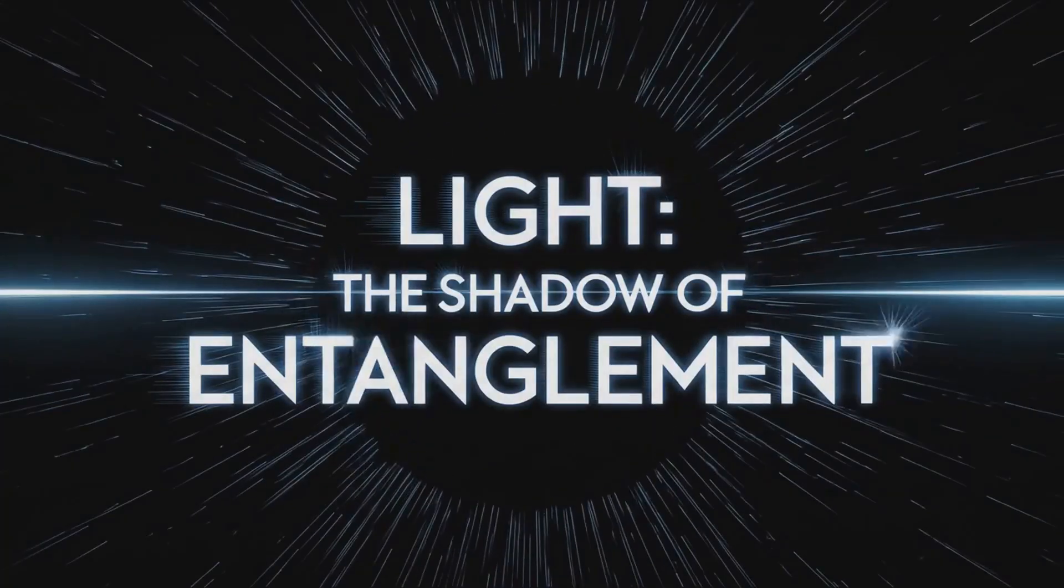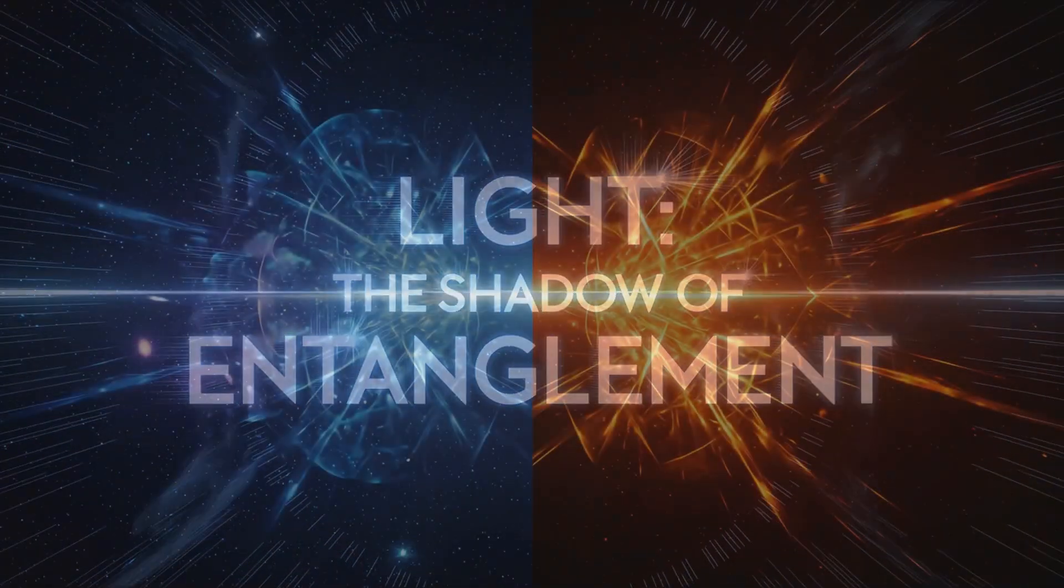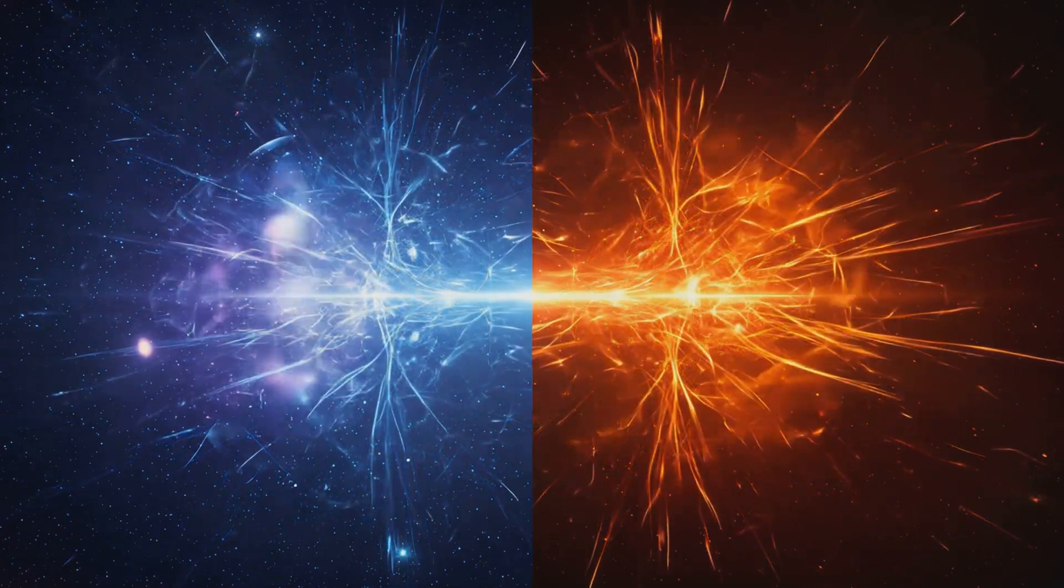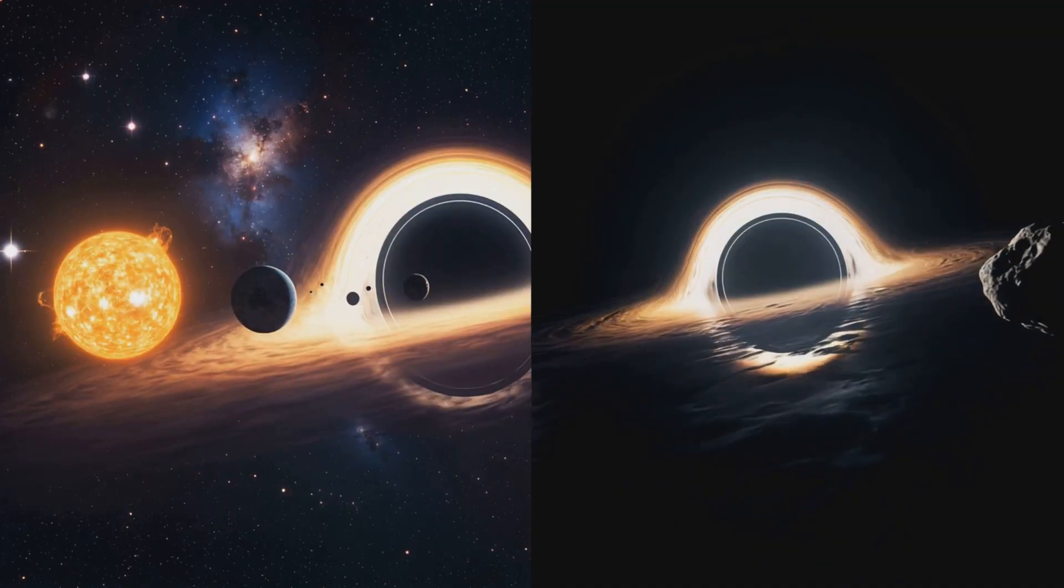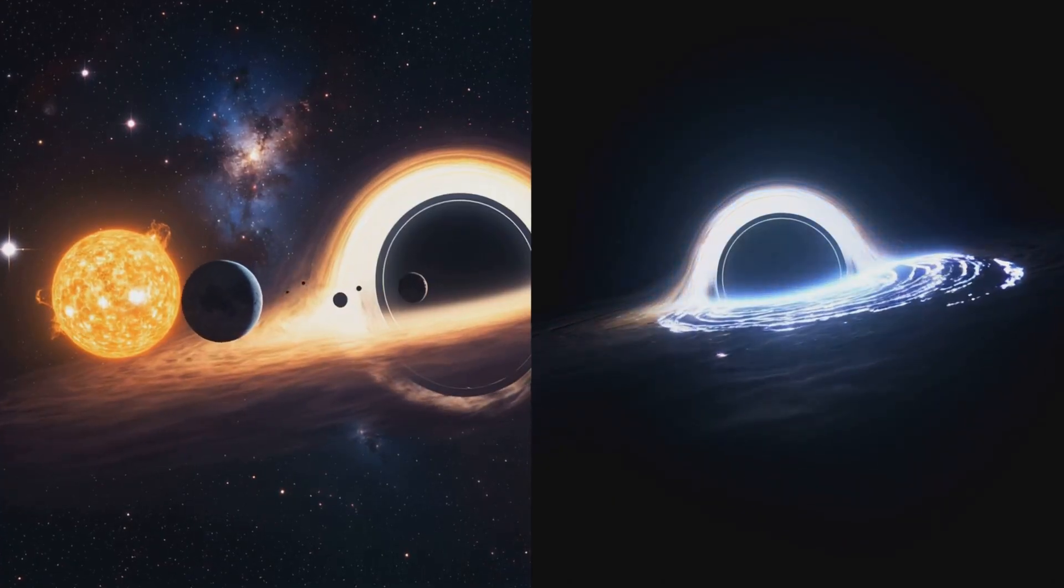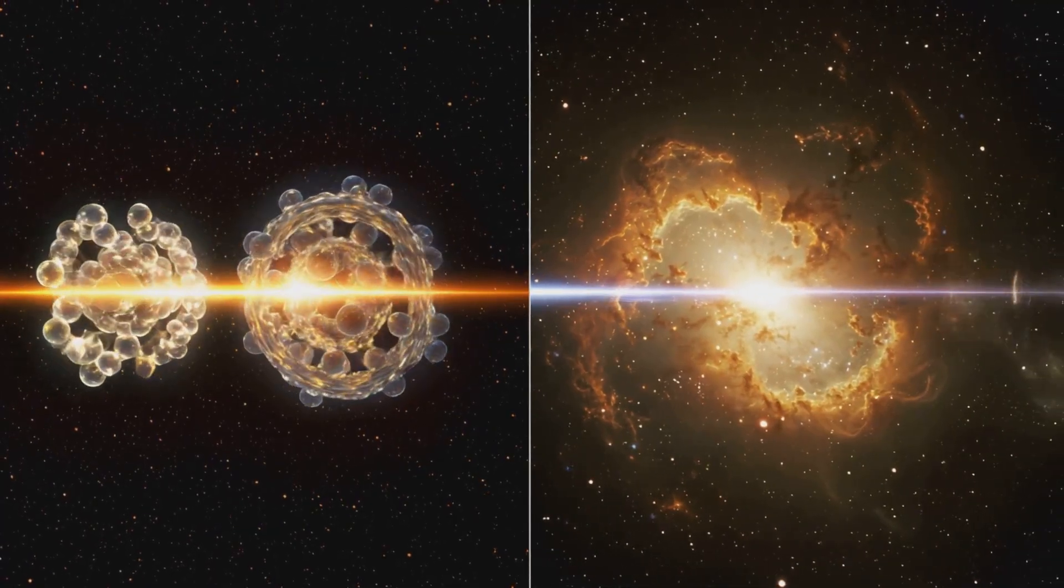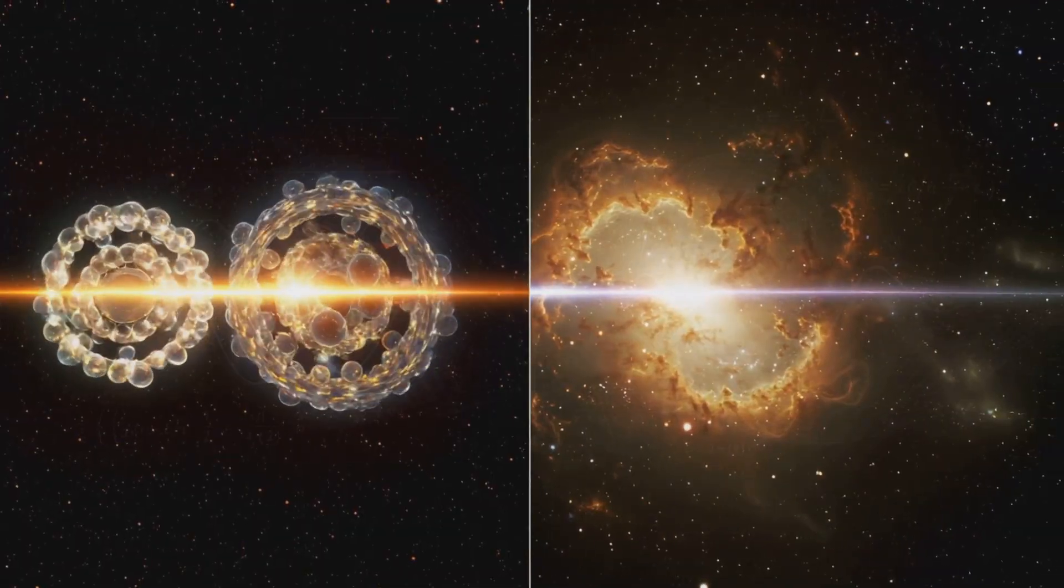Light, as you know it, is not the source. It is the projection, the shadow of deeper entanglement. The singularity is the derivative space, the pure slope of spin. The event horizon is the integral, the surface that accumulates those changes into what you call space-time.